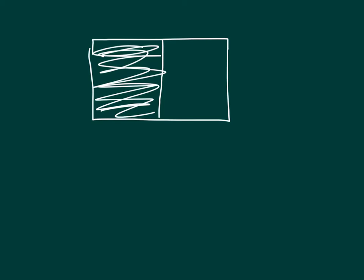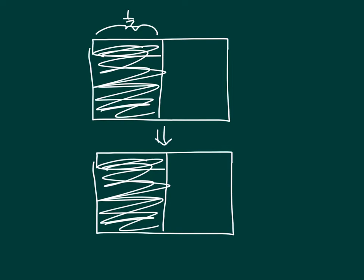Here I have another area model. This area model is showing one-half. Now, if I wanted to go ahead and rewrite one-half using four times as many units, how many horizontal lines would I need to draw within my area model?